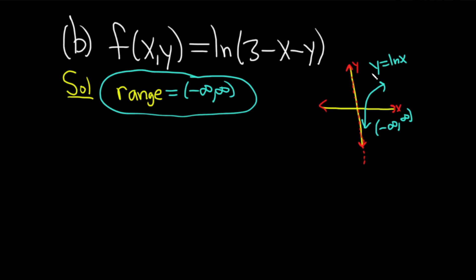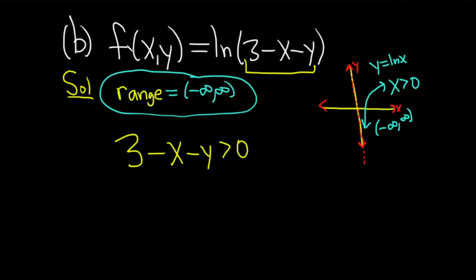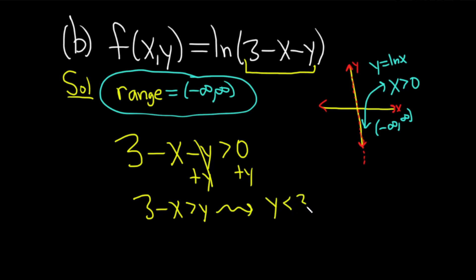As far as the domain, we can use this graph to help us figure it out. Notice that if it was just ln x, that x has to be positive. In our particular example, it's not x — instead it's all of this stuff, 3 minus x minus y. So for the natural log to be defined, we need 3 minus x minus y to be greater than 0. So for any ordered pair we plug in, this must be true. To solve this, we add y to both sides: 3 minus x is greater than y, or written backwards, y is less than 3 minus x.